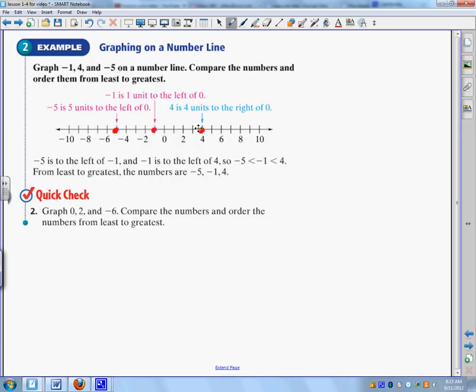Okay, compare the numbers is, they compared everything to zero. So if you look here, it's zero. Negative 5 is 5 units to the left of zero, and 4 is 4 units to the right of zero. So that's how they did it as a comparison. Negative 5 is to the left of negative 1, and negative 1 is to the left of 4. So negative 5 is less than negative 1, which is less than 4. This is a great comparison that you will see a lot in math, is the greater than or less than signs.